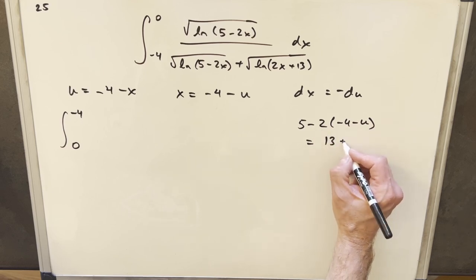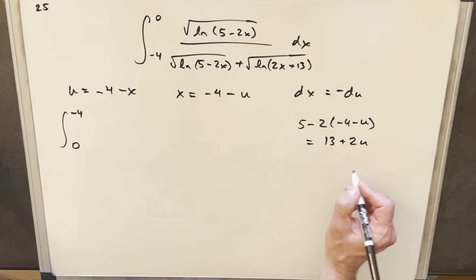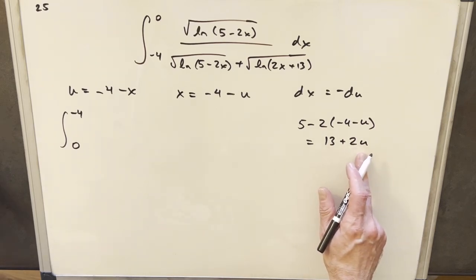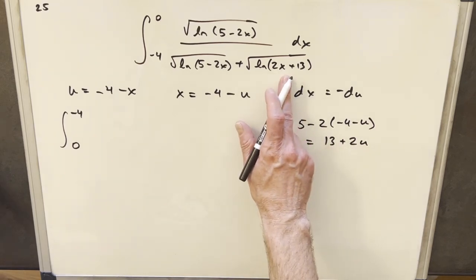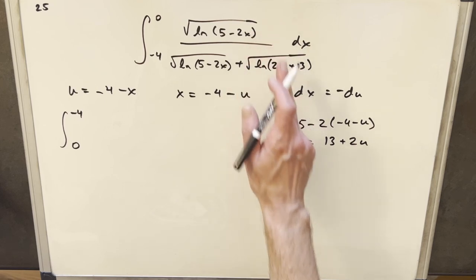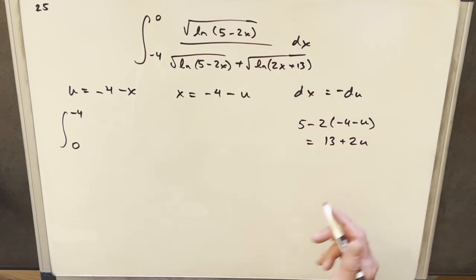Minus 2 times minus u is plus 2u. And notice what we do when we do that substitution in u, we have the same value here that we have there for our 5 minus 2x becomes like 2x plus 13, but in u.